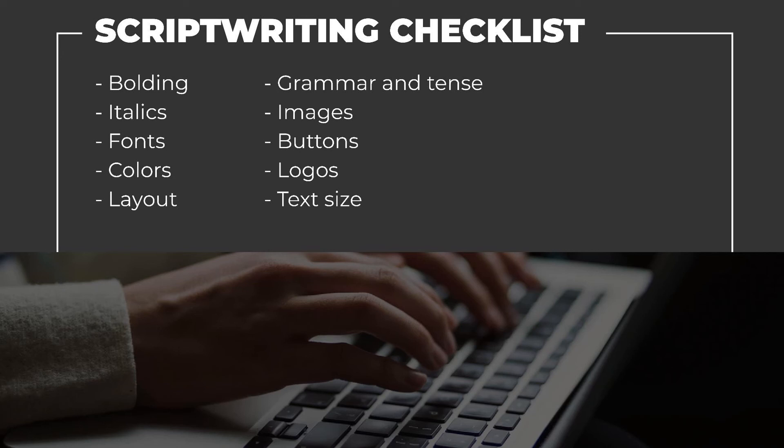6. Grammar and tense — are you talking directly to the learner? Should you use past, present, or future tense? Should you be formal or informal? 7. Images — will your images have shadows, rounded corners, feathering, borders, or reflections?